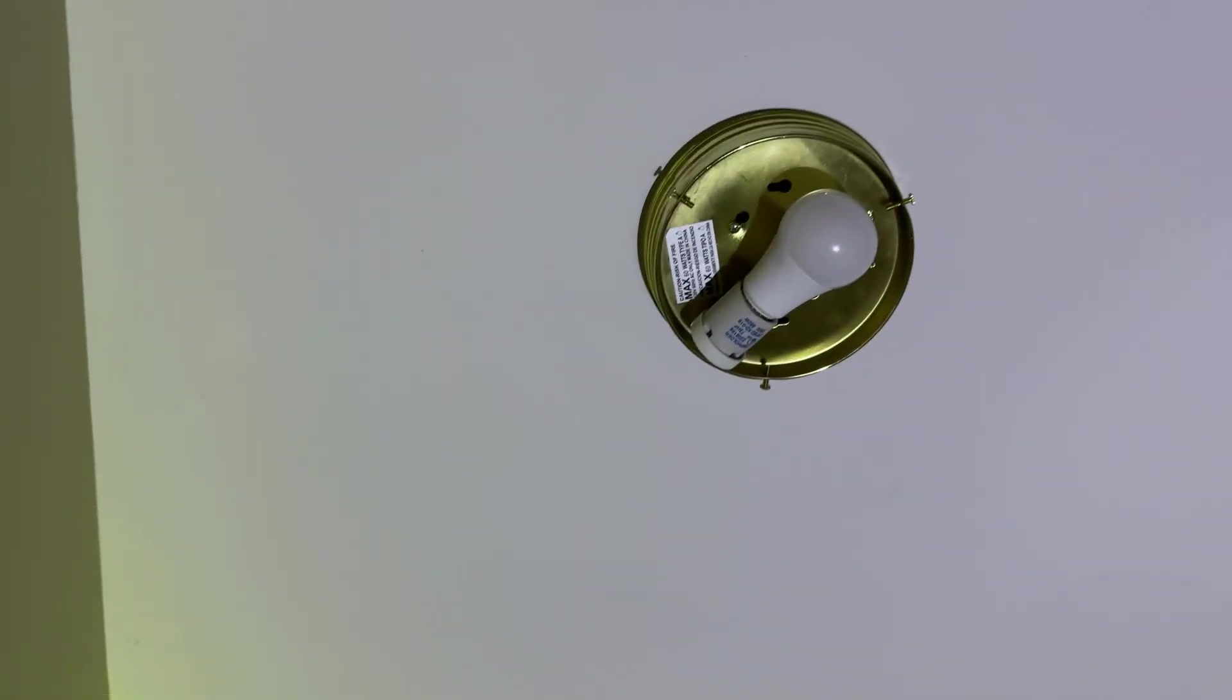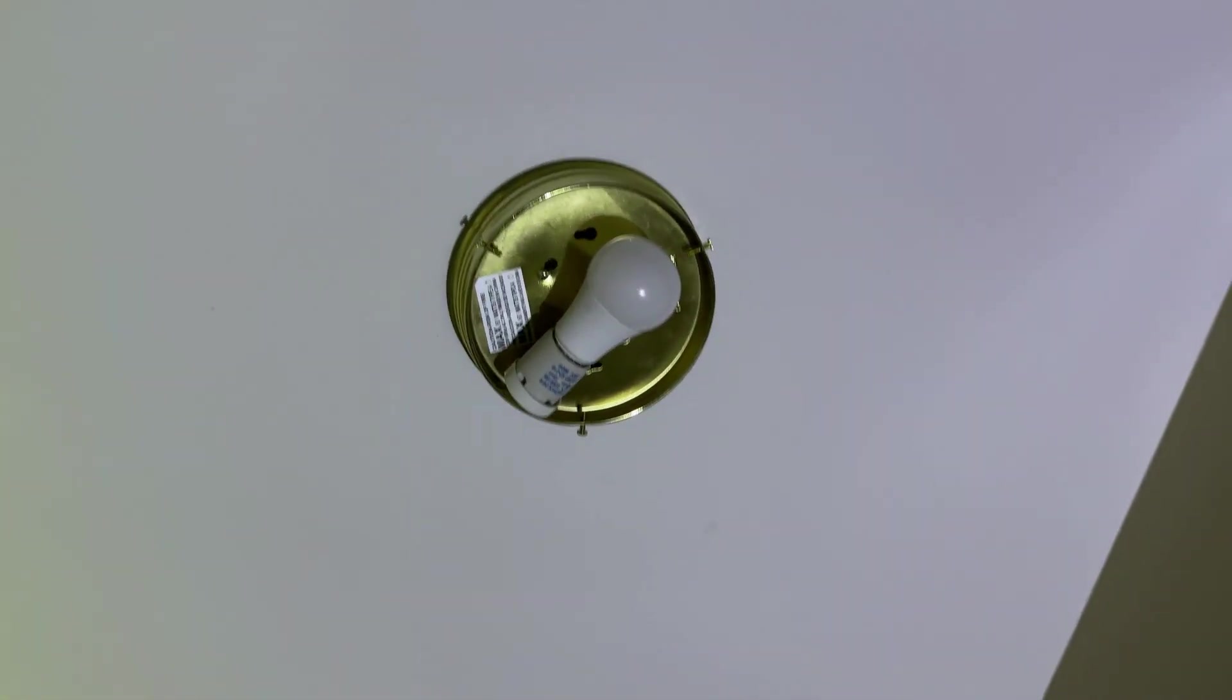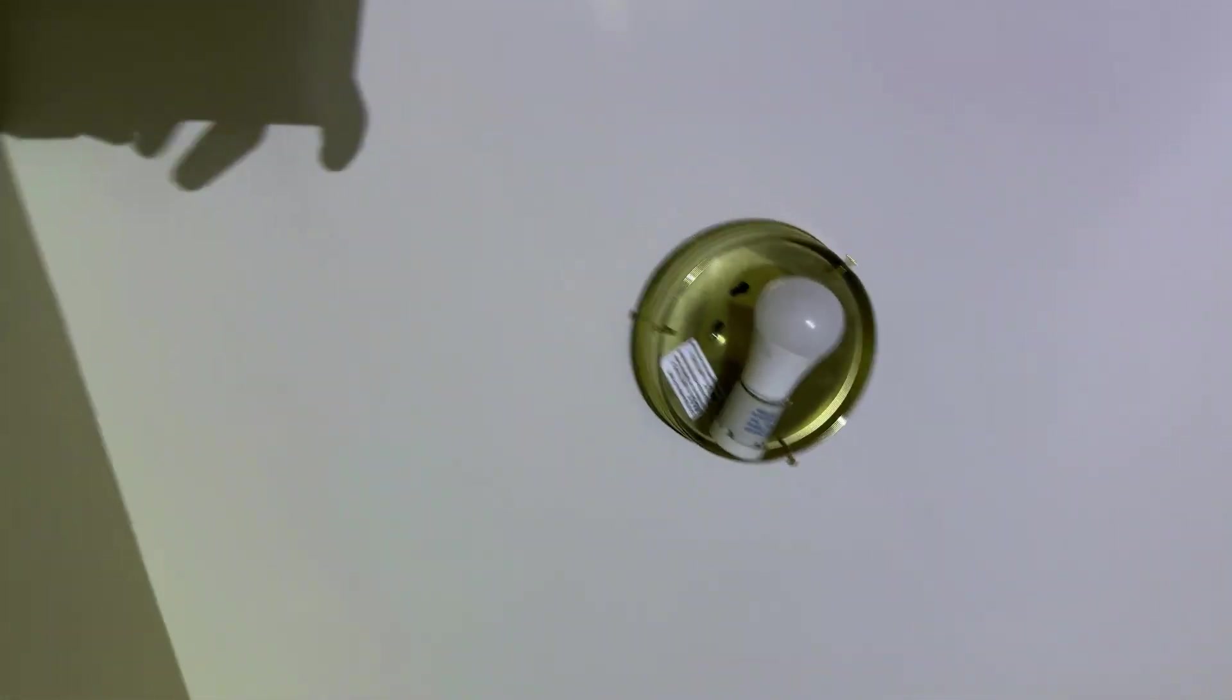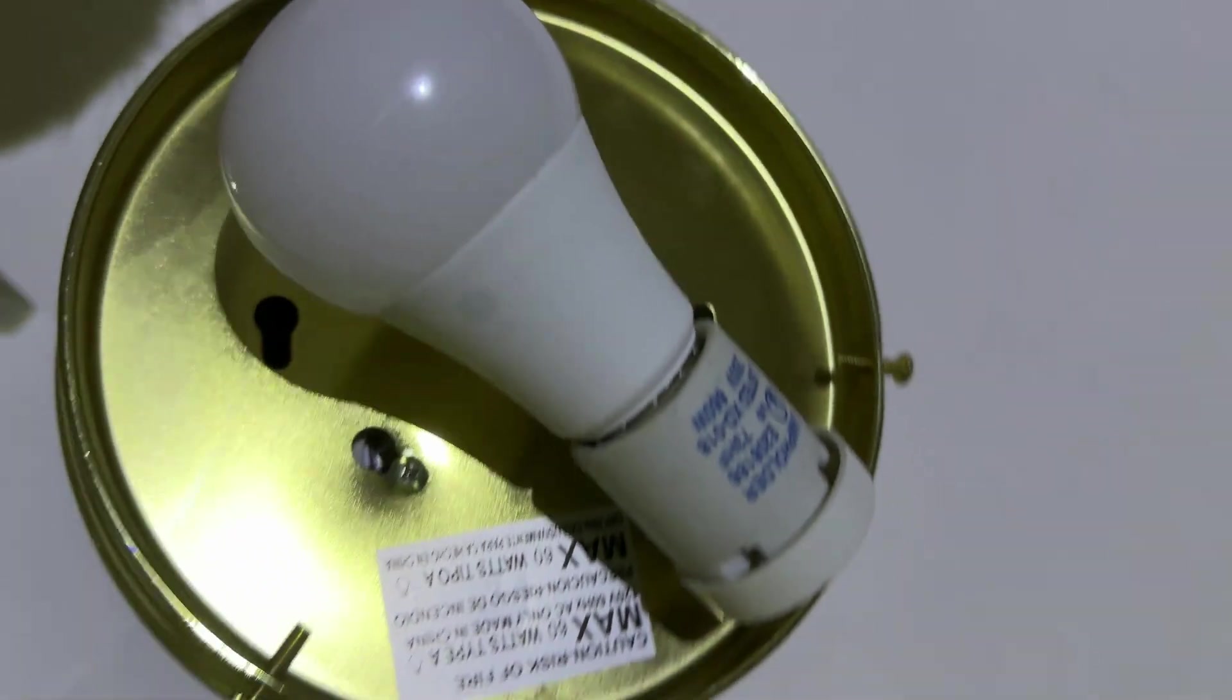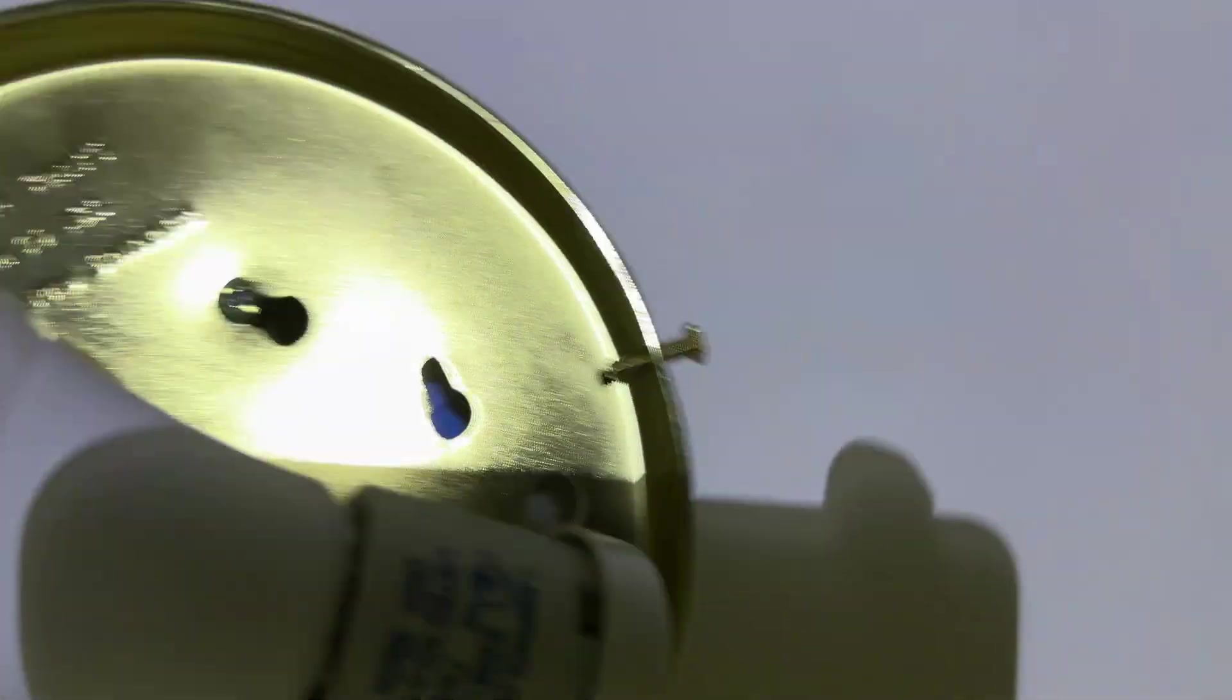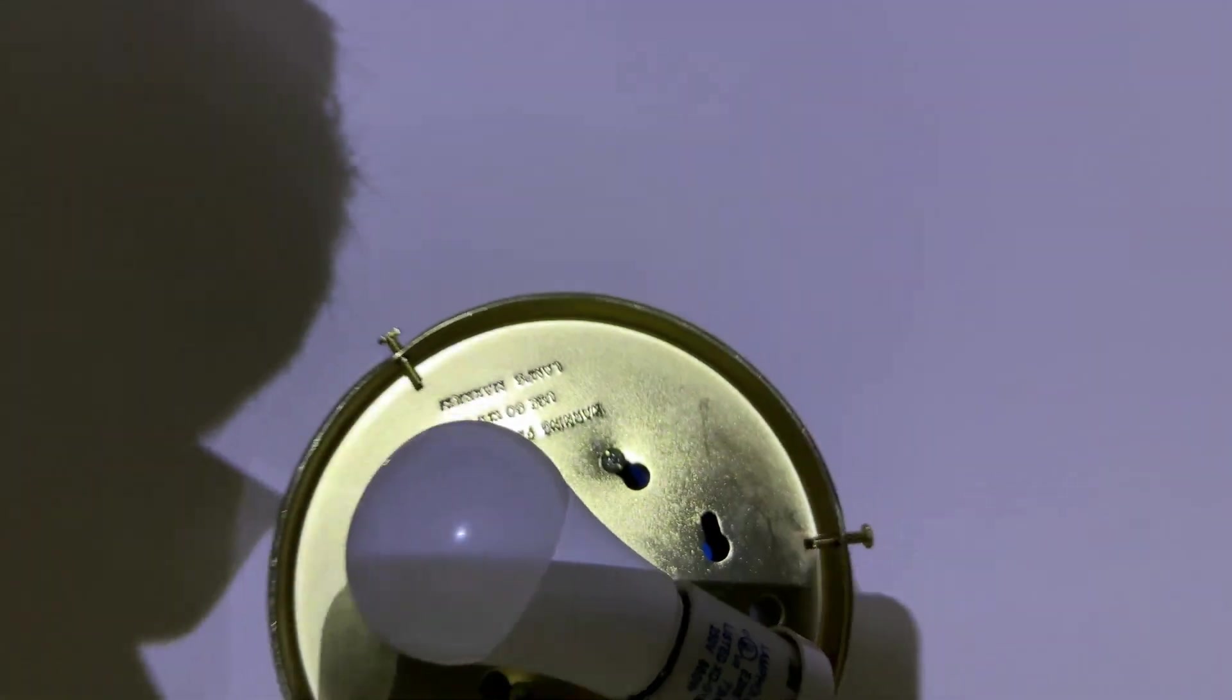As you can see, the screws on the sides, you unscrew that to take the actual dome off. Once you have that off, these screws on the side of the belt here, you unscrew that until the gold part falls down.